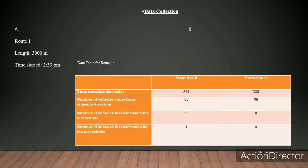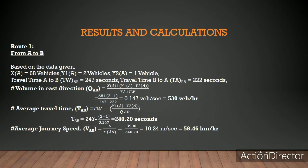In data collection, our route length was 3,900 meters. At around 2:33 PM, we started traveling from Point A to B. The data collected includes time traveled in seconds for both directions, number of vehicles coming from opposite directions, number of vehicles that overtook the test vehicle, and number of vehicles overtaken by the test vehicle. From Point A to B: vehicles we overtook was 1, vehicles that overtook us was 2, and vehicles from the opposite direction was 65. Travel time from A to B was 247 seconds, and from B to A was 222 seconds.